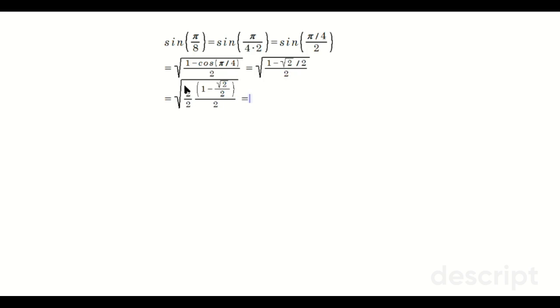Then you continue. You distribute this 2 here. Let me mark it in red. That's going to multiply to this 1, and it's going to cancel with the red 2 here bolded in the bottom.